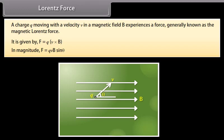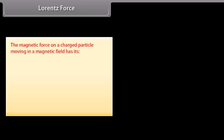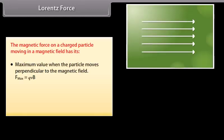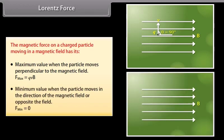The magnetic force on a charged particle moving in a magnetic field has its maximum value when the particle moves perpendicular to the magnetic field: F_max = QVB. The minimum value occurs when the particle moves in the direction of the magnetic field or opposite to it: F_min = 0.